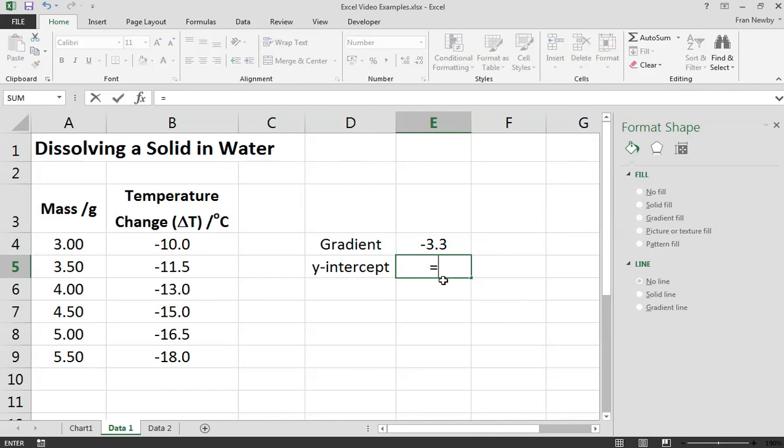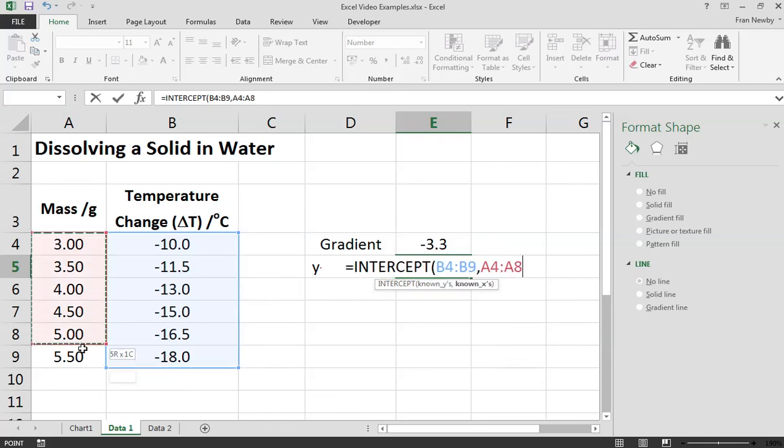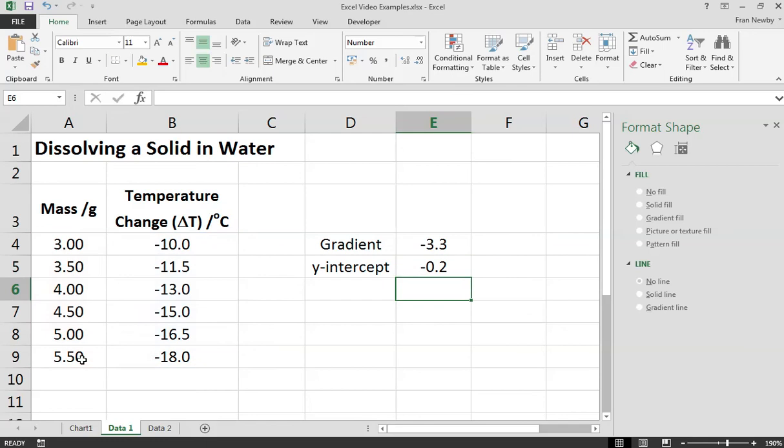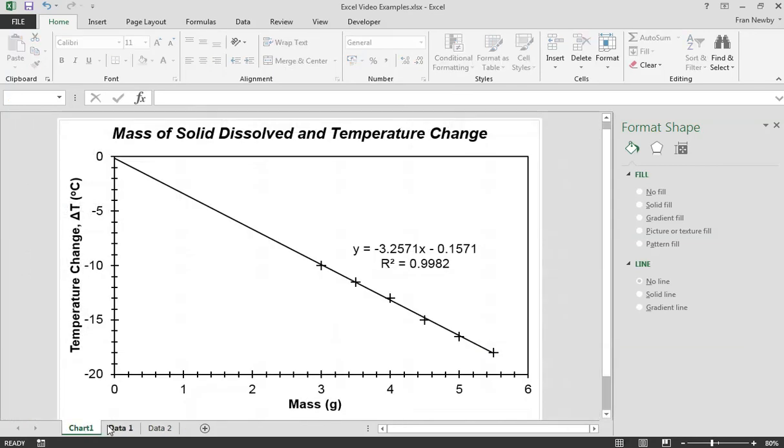We get minus 3.3, which if we look at the chart was what this would be to 1 decimal place. If we want the y-intercept we're going to do equals intercept, and then again it's known y's first, so the dependent variable, and then a comma and then the independent variable. We just close that and again it's minus 0.2, which if we look on the chart was what that would be to 1 decimal place.